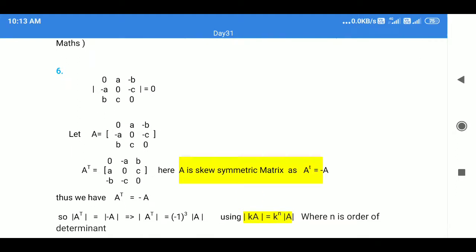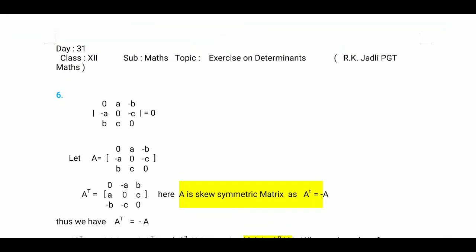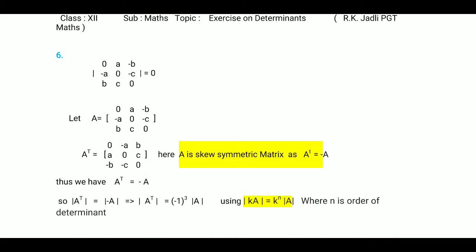We have discussed questions 1, 2, 3. Now I am taking question number 6, where you have to find the value of this determinant and show it is 0. If we directly calculate by the method of finding the value of an order 3 determinant, we get 0. But it is written that you have to find the value using a property.